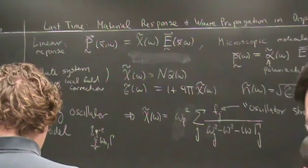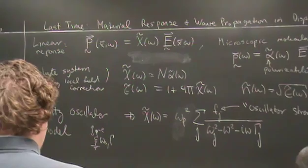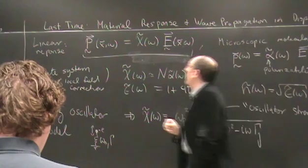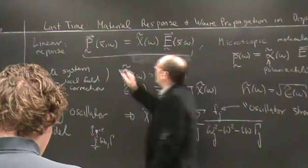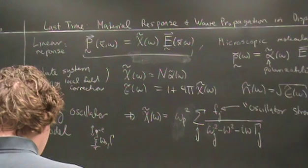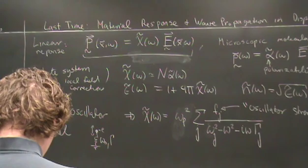We are studying the way in which a dielectric material responds to oscillating electric fields and how that relates to propagation of electromagnetic waves. We're looking in particular at linear response, where the polarization—the electric dipole density—is linearly proportional to the field in the medium, with the proportionality constant being the electric susceptibility. For the moment, we're taking this to be a scalar, assuming our medium is isotropic and responds in the direction of the applied field.